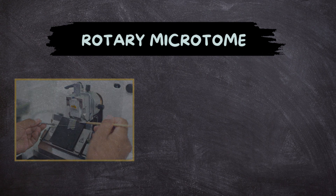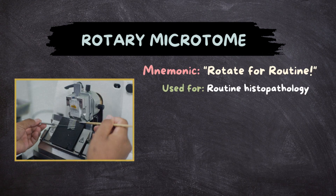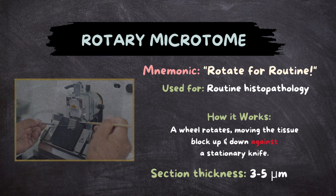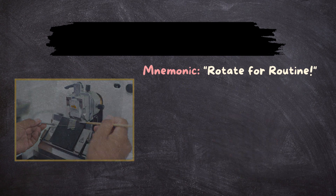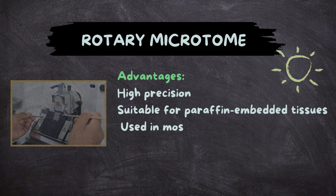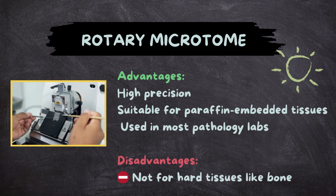The Rotary Microtome — the routine workhorse. Mnemonic: 'Rotate for routine.' Used for routine histopathology. A wheel rotates, moving the tissue block up and down against a stationary knife. Section thickness: 3 to 5 micrometers. Advantages: high precision, suitable for paraffin-embedded tissues, used in most pathology labs. Disadvantages: not for hard tissues like bone.